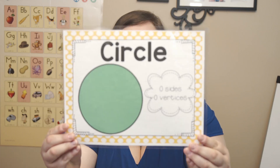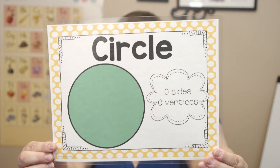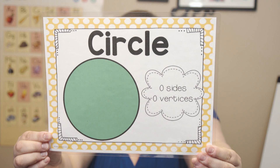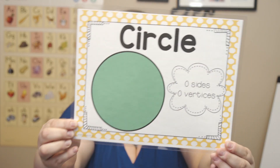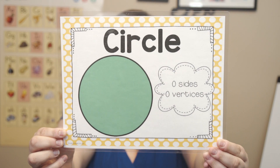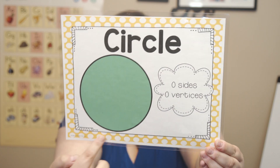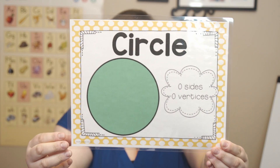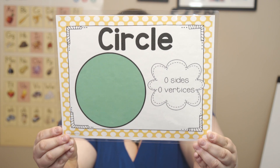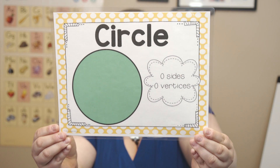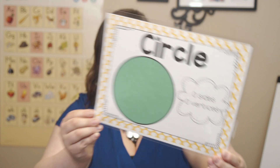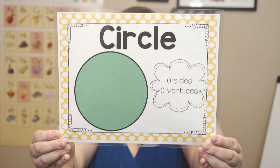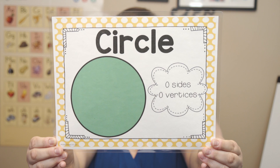Let's go over our 2D shapes. Here's the first one — do you remember what this is called? Did you say circle? You got it, it's a circle. Do you see any corners in this circle? Any vertices? Do you see any lines that connect corners together? No, you don't. It has zero sides and zero vertices.